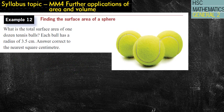Okay, the next one, let's have a look. It is a sphere question, this one. What is the total surface area of one dozen tennis balls? Each ball has a radius of 3.5 centimeters. Answer to the nearest square centimeter.